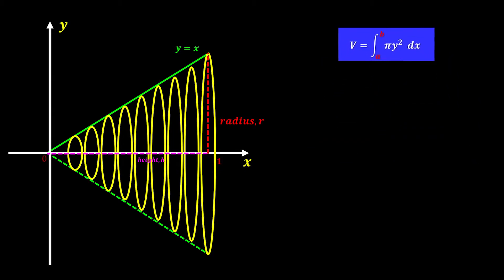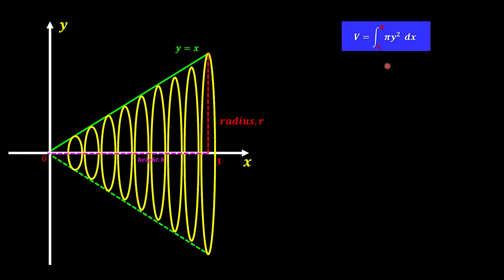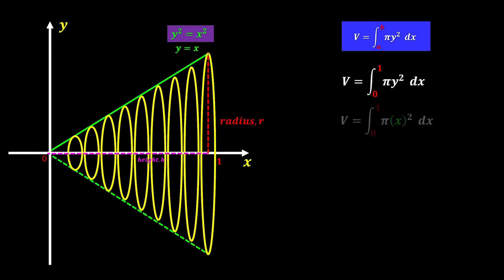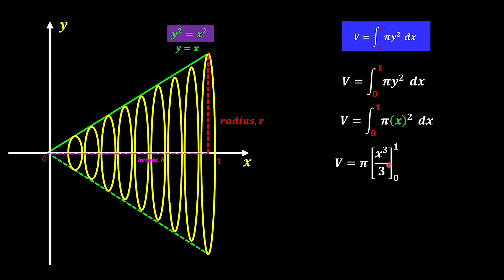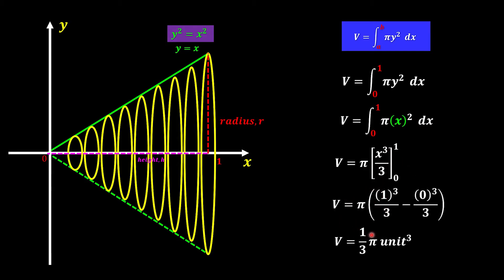Now let's look at one example. We have the boundary from 0 to 1, so we set A and B to become 0 to 1. Since we're looking for the volume rotated about the x-axis, we use the formula of pi y squared dx. We need to find y squared — since y equals x, squaring both sides gives y squared equals x squared. Substituting into our equation, we take out the constant pi and integrate x squared: power increased by 1 divided by the new power, with boundary 0 to 1. Taking the upper limit minus the lower limit, we get the answer of one-third pi unit cubed.